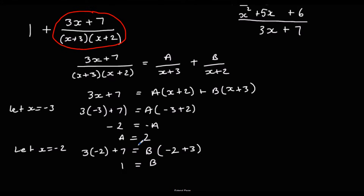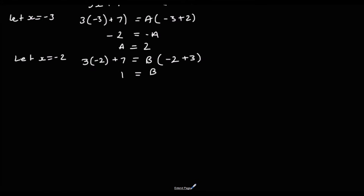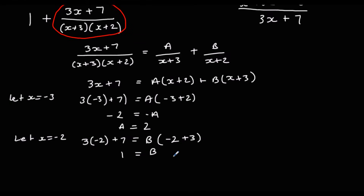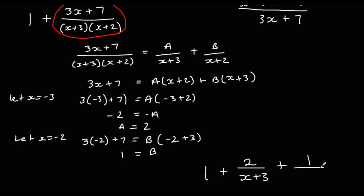So let's rewrite the whole thing: we've got 1 on the outside, plus A — which is 2 — over (x + 3), plus B — which is 1 — over (x + 2). And there we have it: we've expressed it as partial fractions.